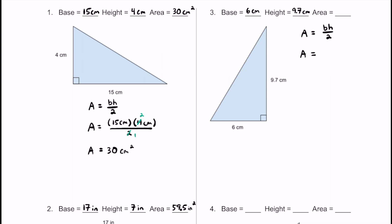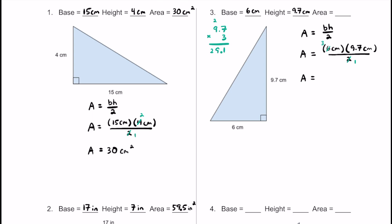Making some substitutions: area equals the base of 6 centimeters multiplied by the height of 9.7 centimeters, divided by 2. To avoid long division, let's cross-cancel — the 2 and the 6 work nicely, becoming 1 and 3. Now we just multiply 3 by 9.7. Multiplying 9.7 and 3 gives us 29.1. Centimeters times centimeters gives us centimeters squared, so the area of this triangle is 29.1 square centimeters.